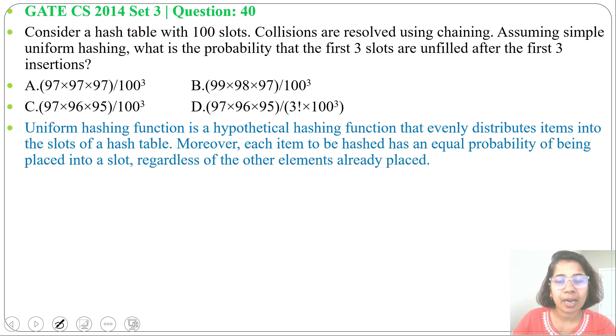Uniform hashing function is a hypothetical hashing function that evenly distributes items into the slots of the hash table. We can say every key probability is the same.